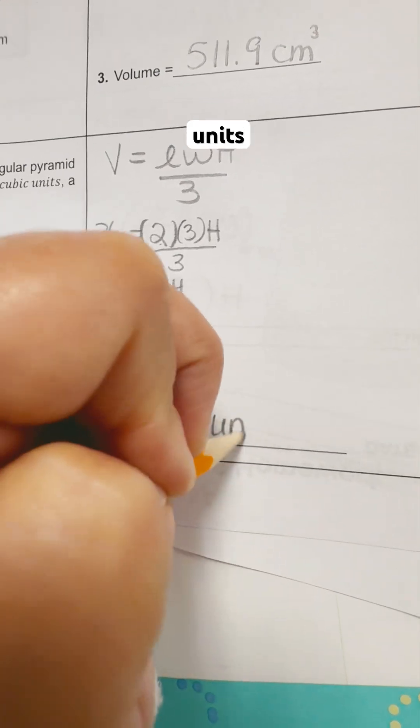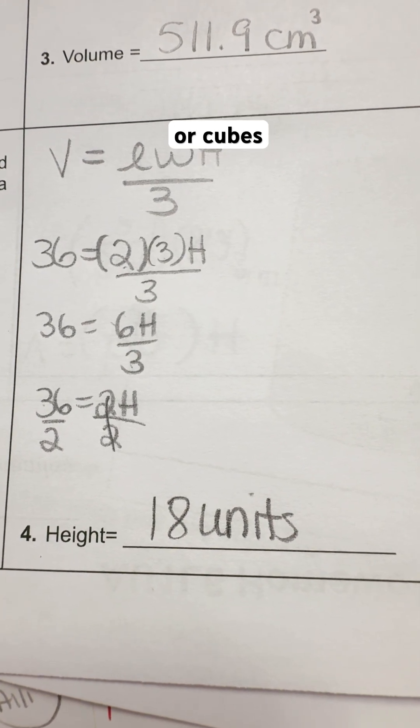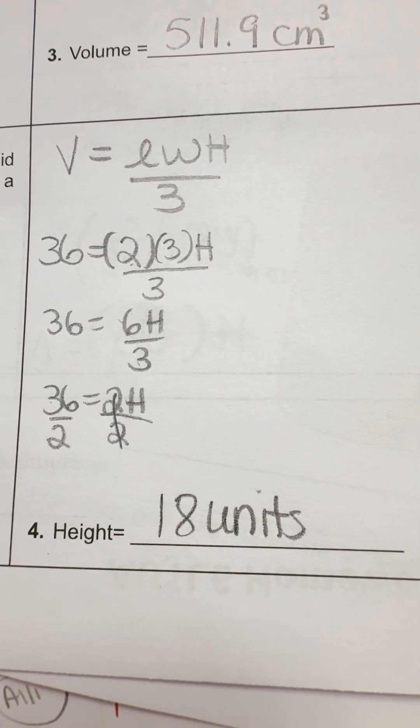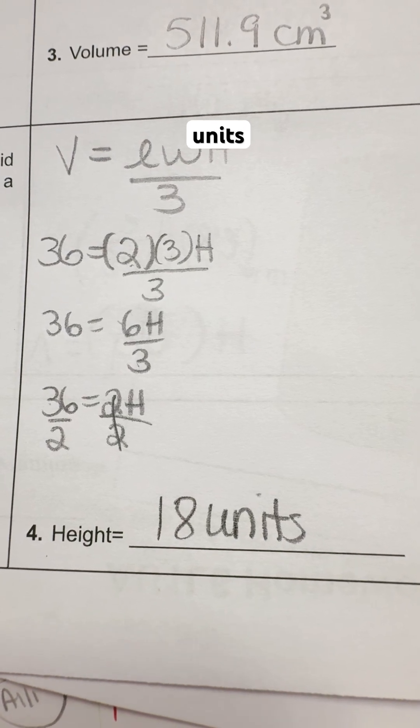And we don't know what the units are, so we're just going to call this units. Again, you do not want to put any kind of squares or cubes or anything like that next to this because we're just looking for one dimension of this shape. So 18 units is the correct answer.